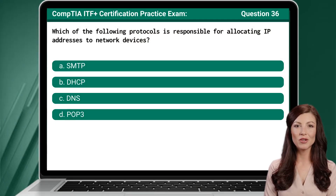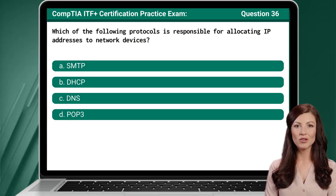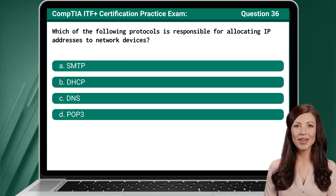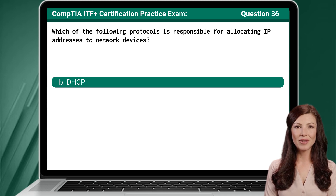Question 36. Which of the following protocols is responsible for allocating IP addresses to network devices? The answer is B. DHCP.